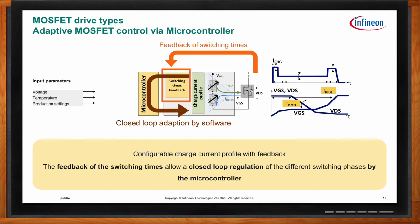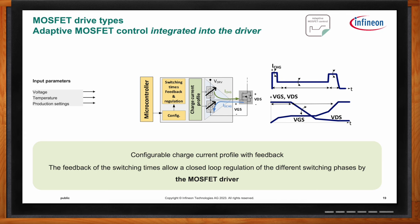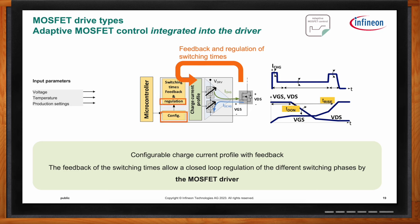Is it possible to integrate the regulation loop in the MOSFET driver itself? Yes — Infineon has integrated this adaptive MOSFET control into the driver itself. The microcontroller only configures the switching times, which is a very simple setup involving a few SPI register bits. The adaptation of the current profiles is done by the MOSFET driver itself, reducing microcontroller workload and the amount of software an engineer needs to write. The gate driver self-adapts the currents to meet the configured timing, providing closed-loop regulation of switching phases without extensive software development.